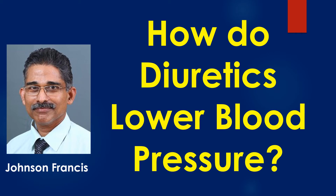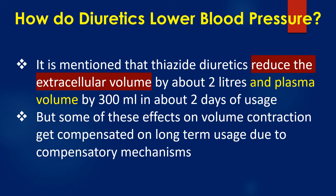Diuretics lower blood pressure by lowering the intravascular volume and sodium content. Lower sodium content may also reduce the vascular tone. Thiazide diuretics reduce the extracellular volume by about 2 litres and plasma volume by 300 ml in about 2 days of usage. However, some of these effects on volume contraction get compensated on long-term usage due to compensatory mechanisms.